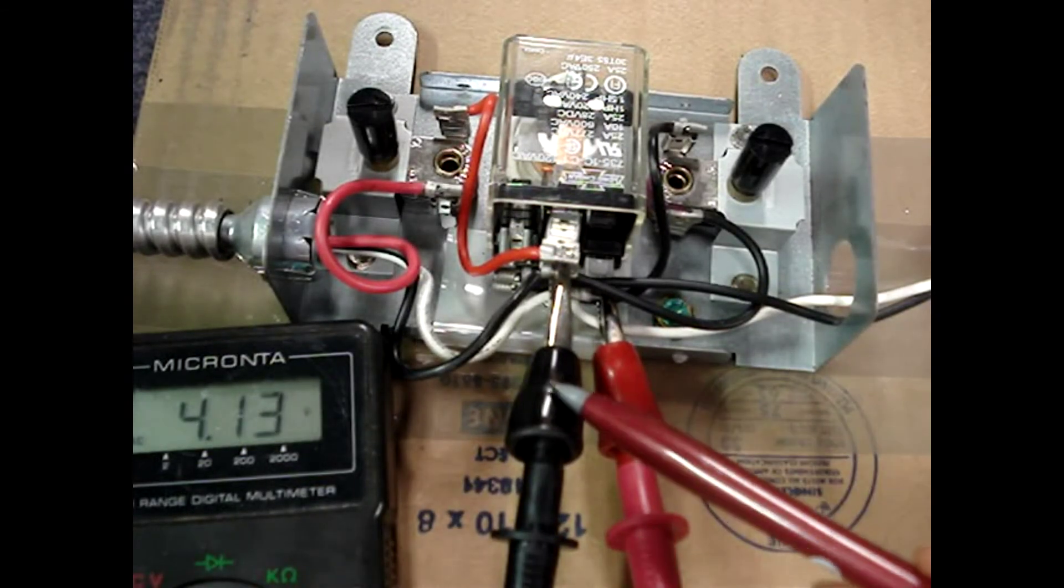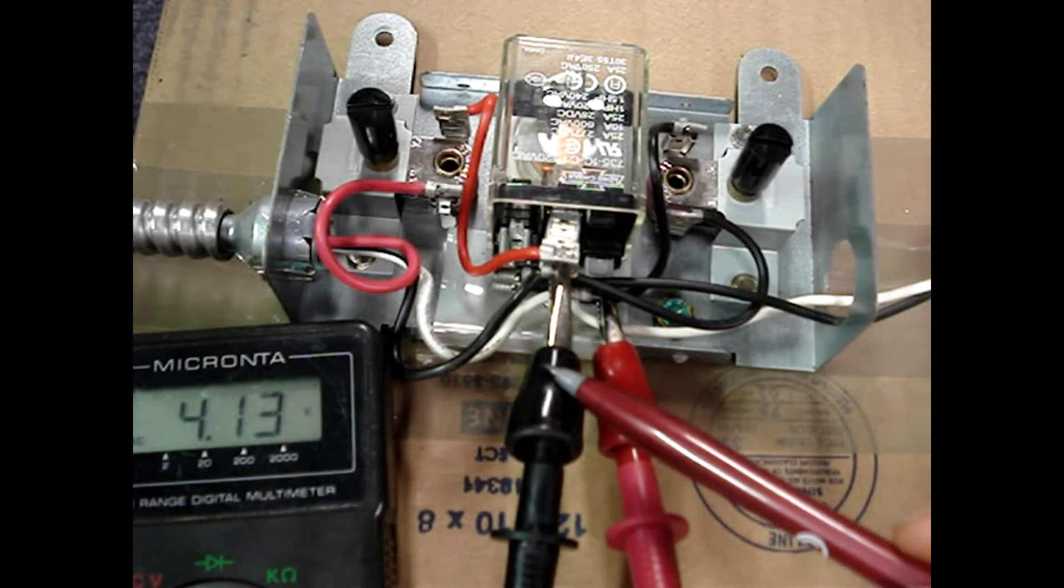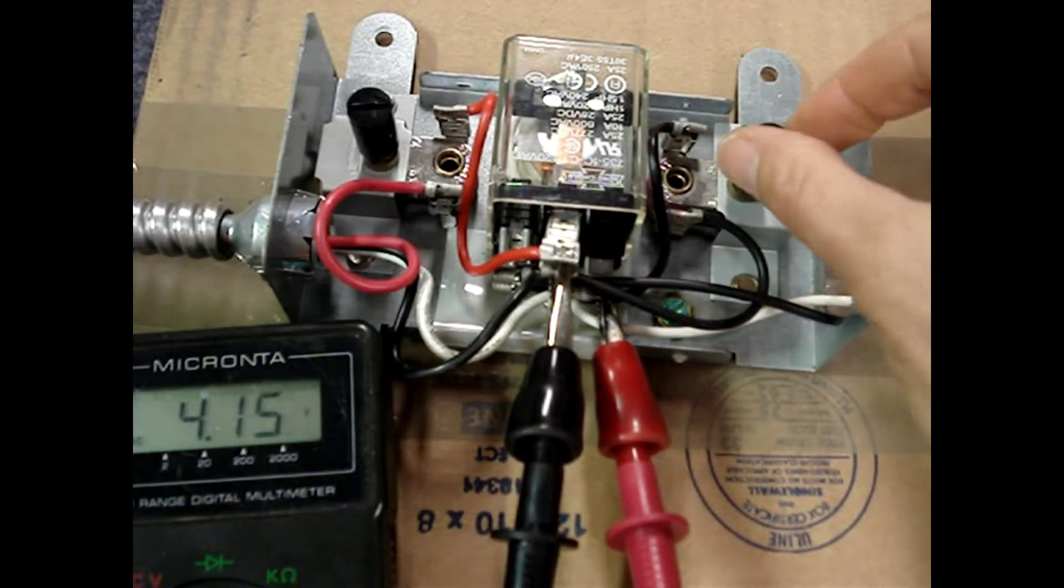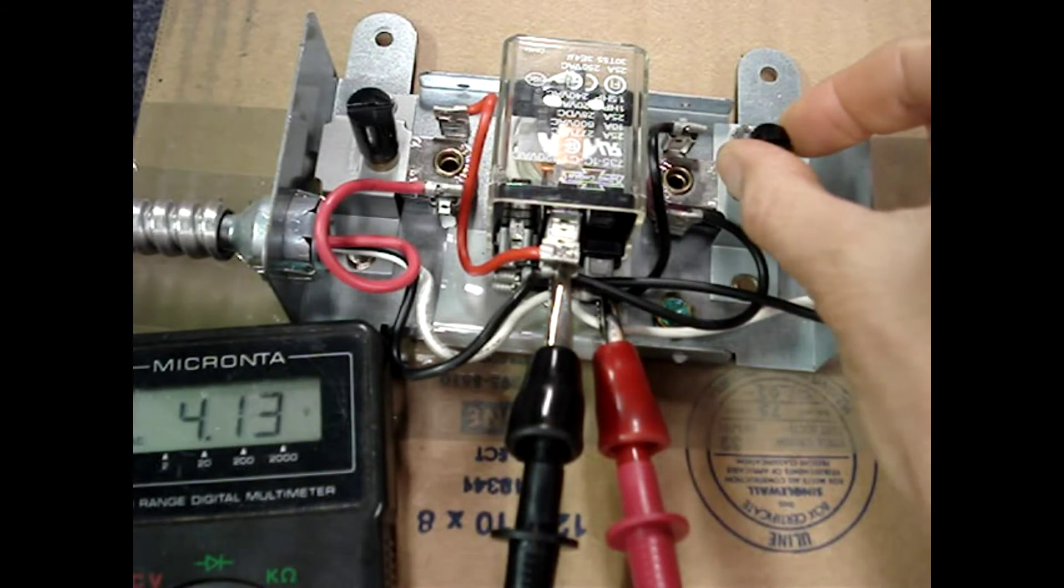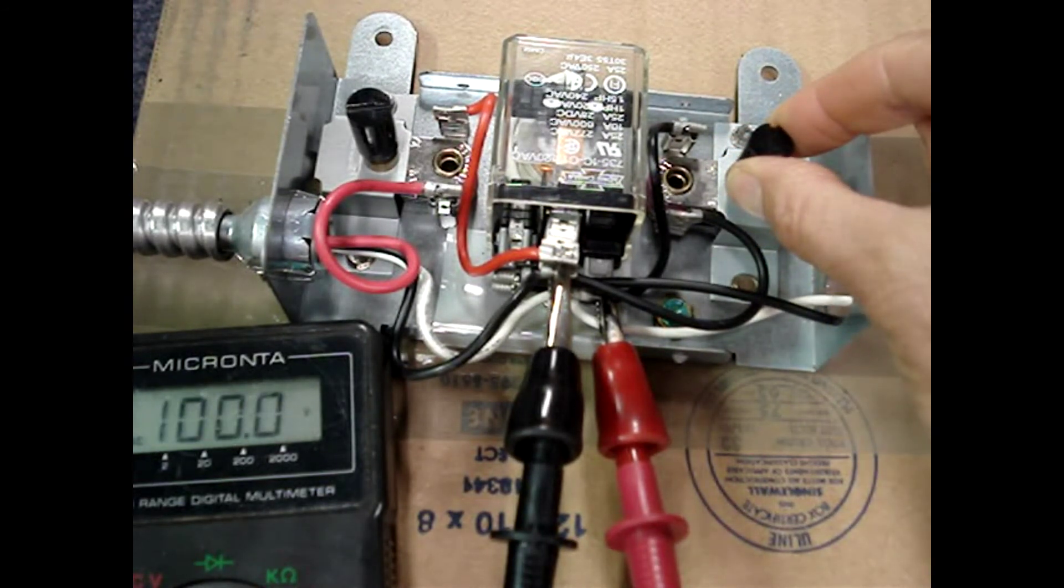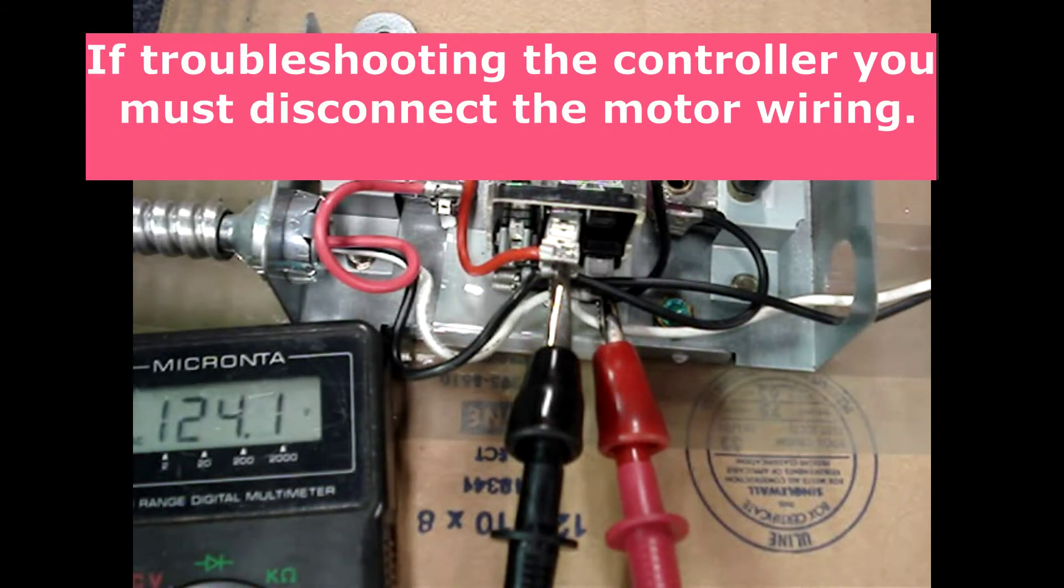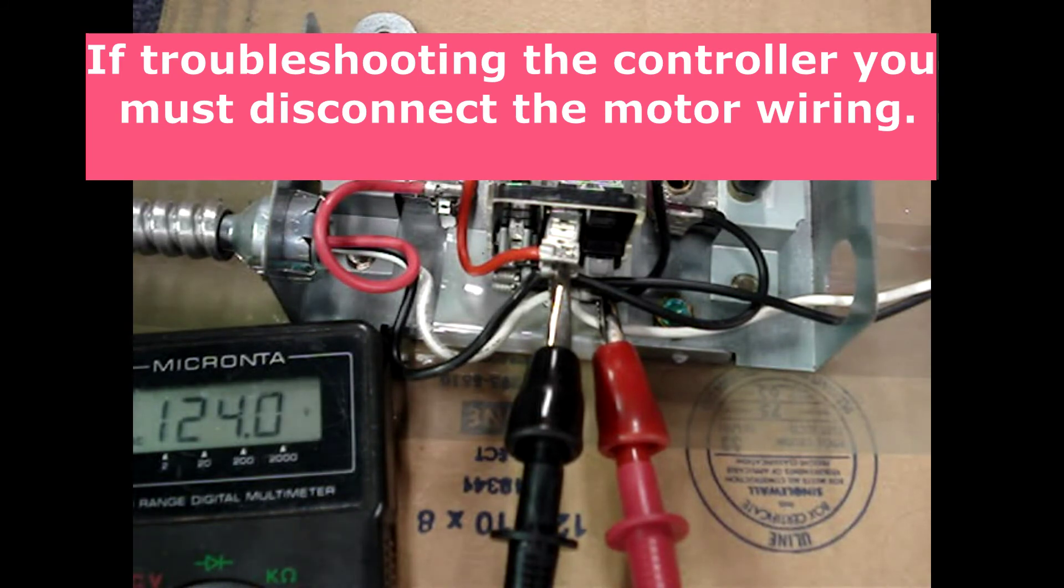I've switched my meter lead to the high speed fan winding. I'll simulate the attic temperature rising above 100 degrees and you could hear the relay click. The coils have energized and we now have 120 volts on the high speed fan leg.